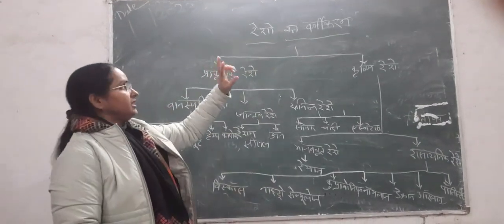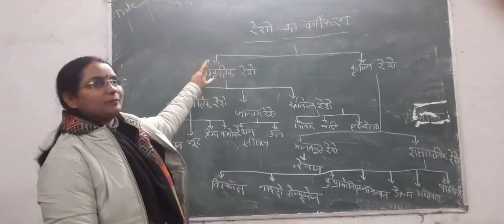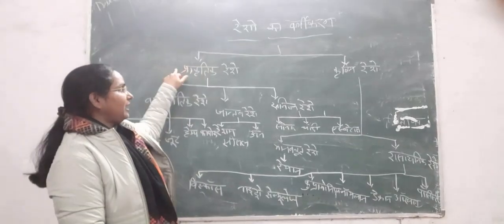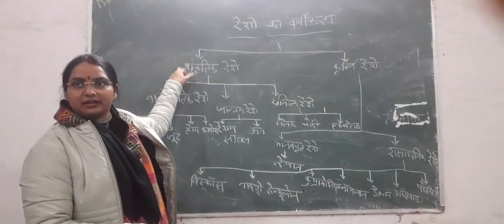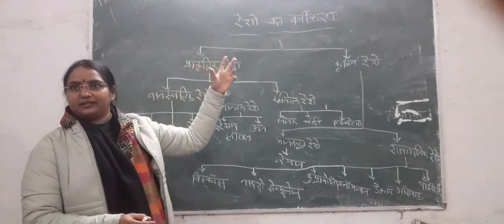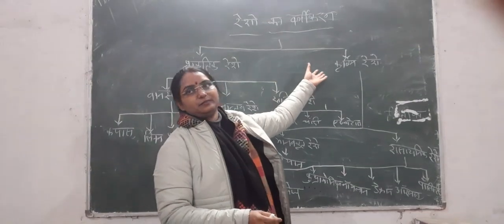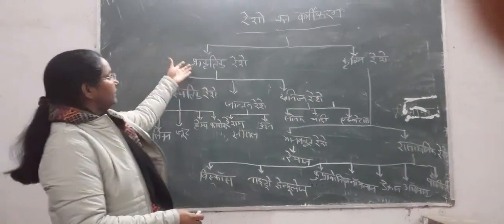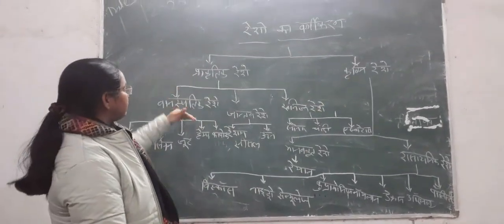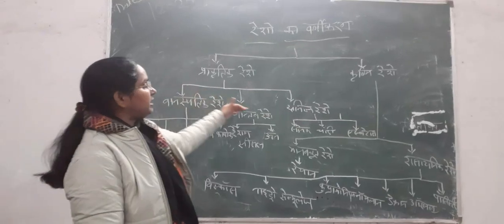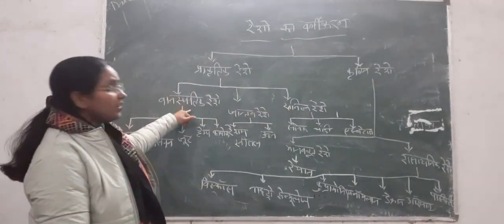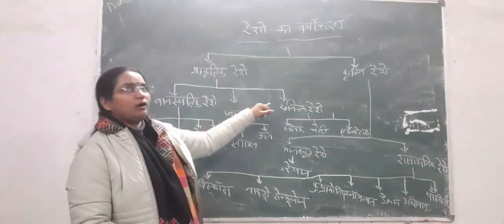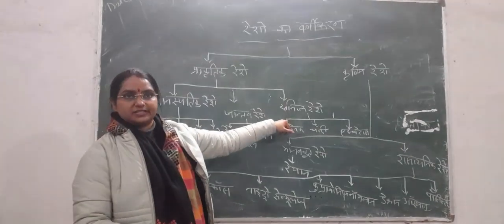Risho Kavadhi Karad will be done in two ways. First is Prakritik Rishi, Natural Fiber. Second is Prakritik Rishi, Natural Fiber. Prakritik Rishi we will divide into three parts: Balasatik Rishi, Jantao Rishi, and Khanid Rishi.